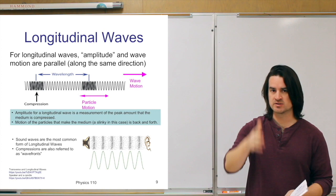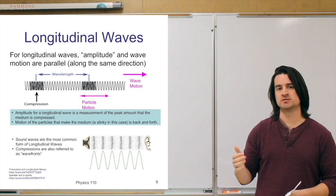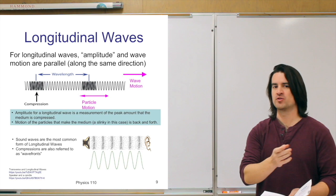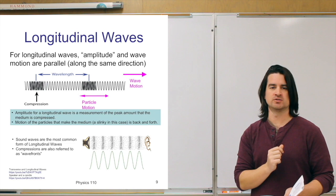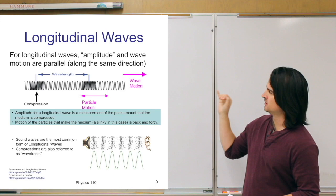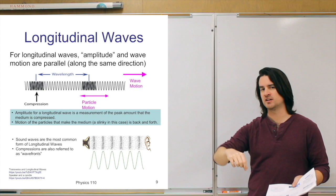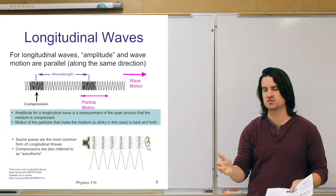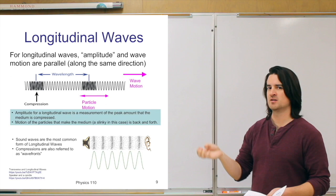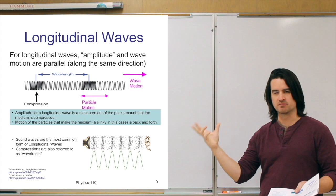That was the first type of wave — transverse waves, where the motion is perpendicular to the wave motion. The second type is longitudinal waves. In a longitudinal wave, the motion of the material making up the wave is actually parallel to the motion of the wave. Instead of peaks and troughs as easily visible, you see compression and decompression of the medium.